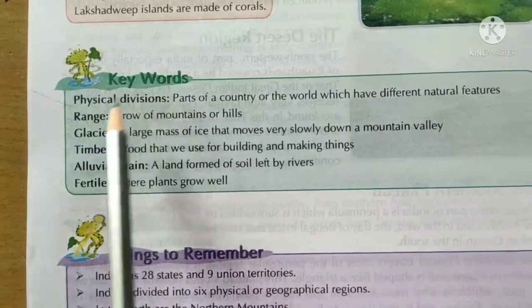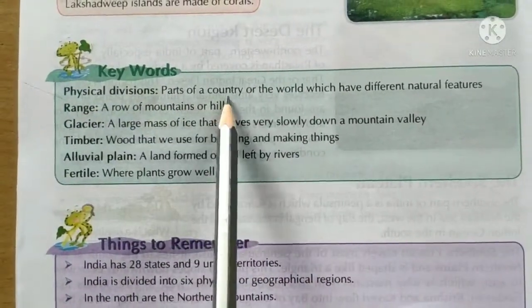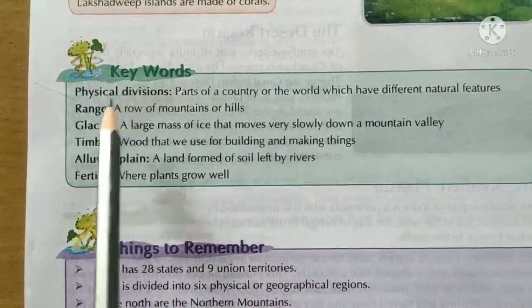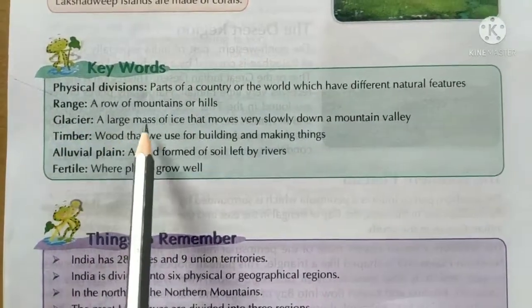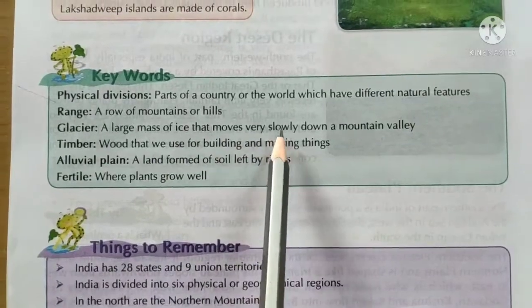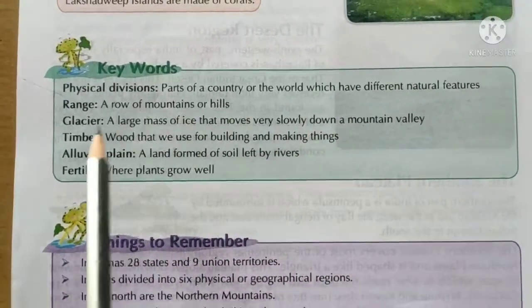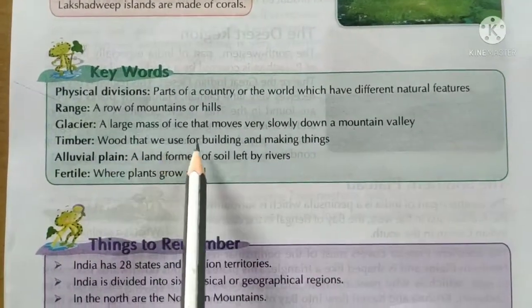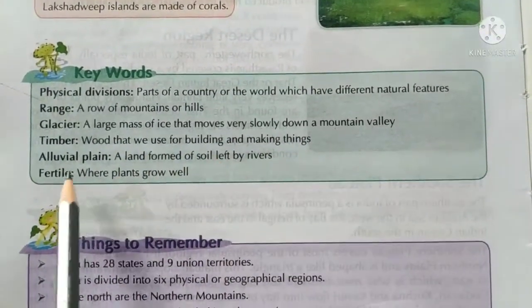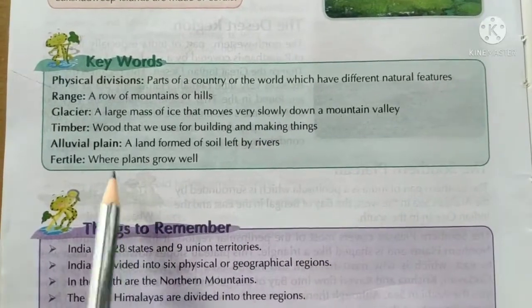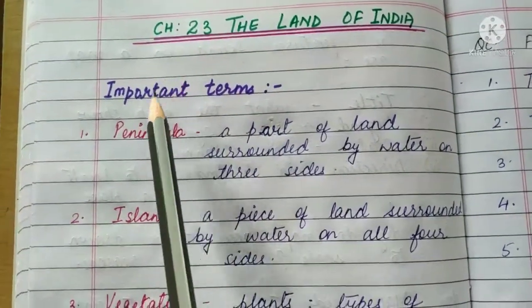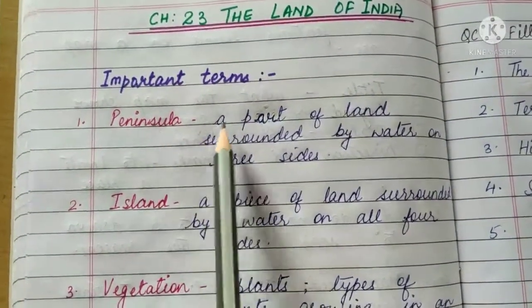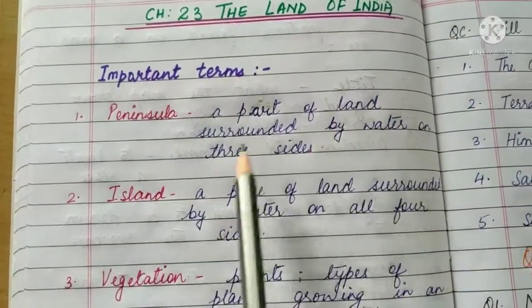Keywords: Physical divisions — parts of a country or the world which have different natural features. Range — a row of mountains or hills. Glacier — a large mass of ice that moves very slowly down a mountain valley. Timber — wood that is used for building and making things. Alluvial plain — a land formed of soil left by rivers. Fertile — where plants grow well.